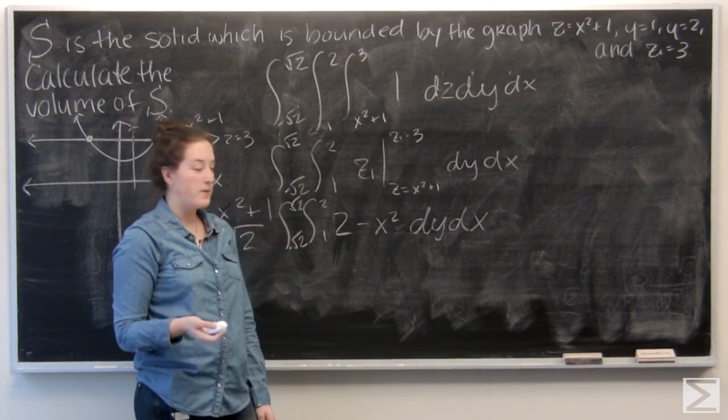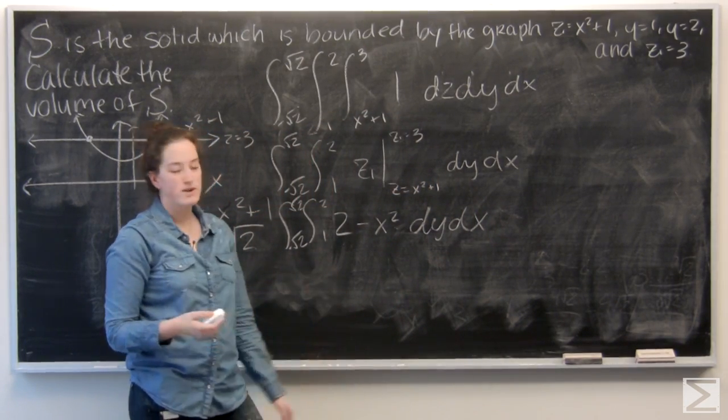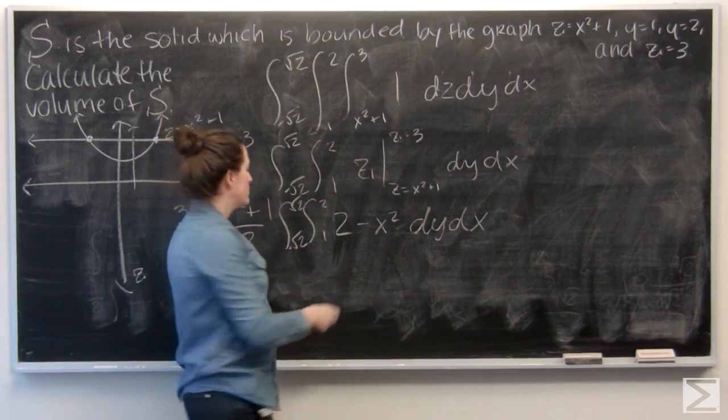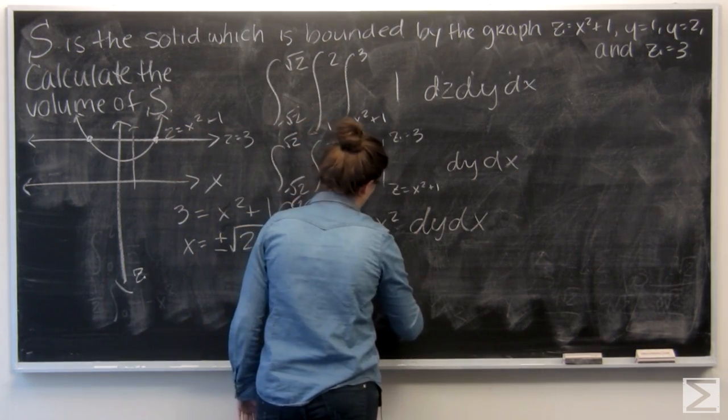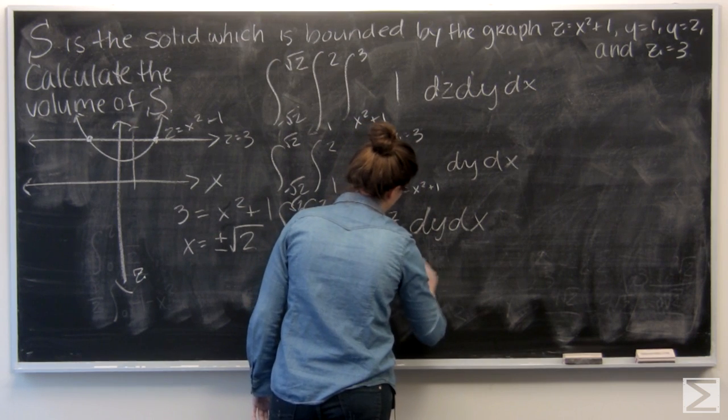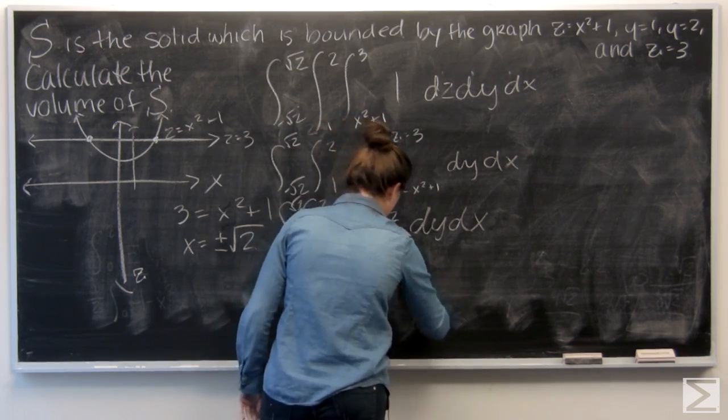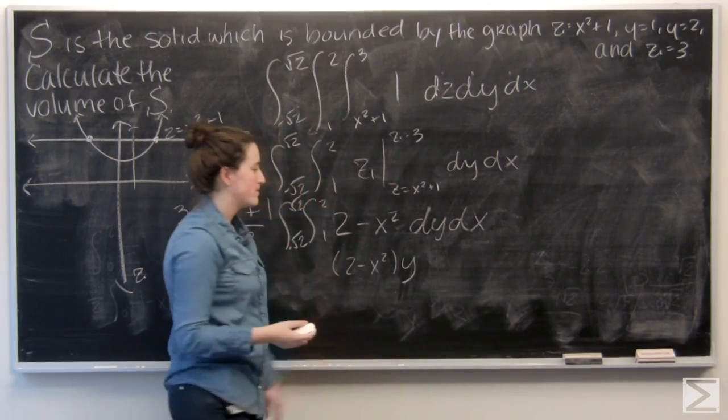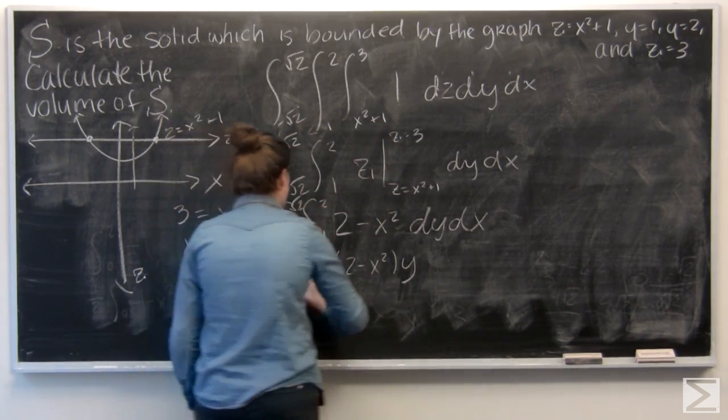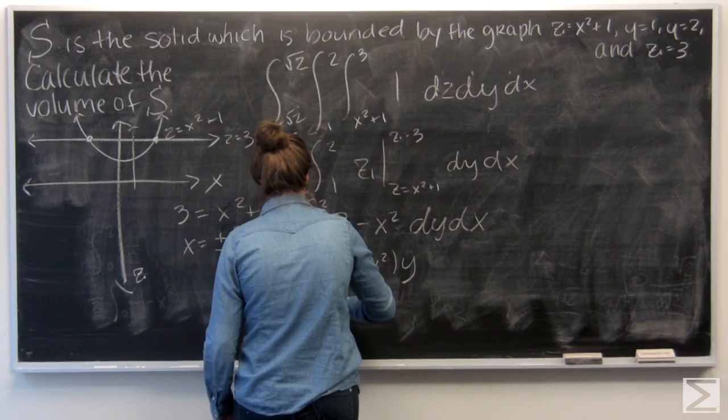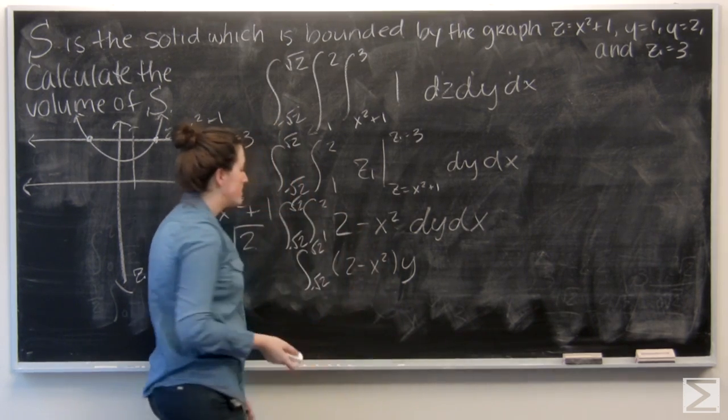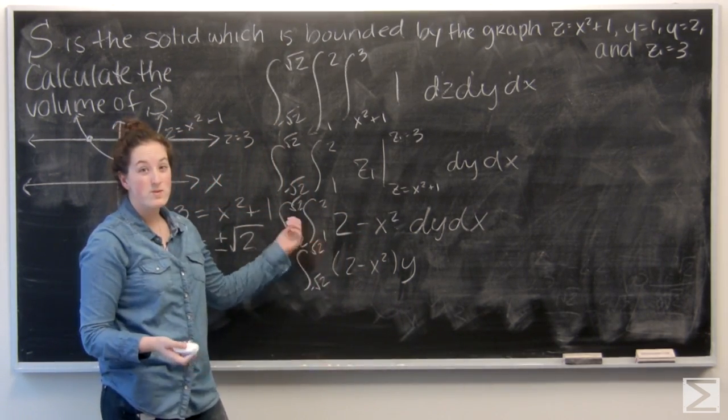So now I'm ready to integrate with respect to y. 2 minus x squared is just a constant, so I'm going to get 2 minus x squared times y. And I'm ready to evaluate from y equals 1 to y equals 2.